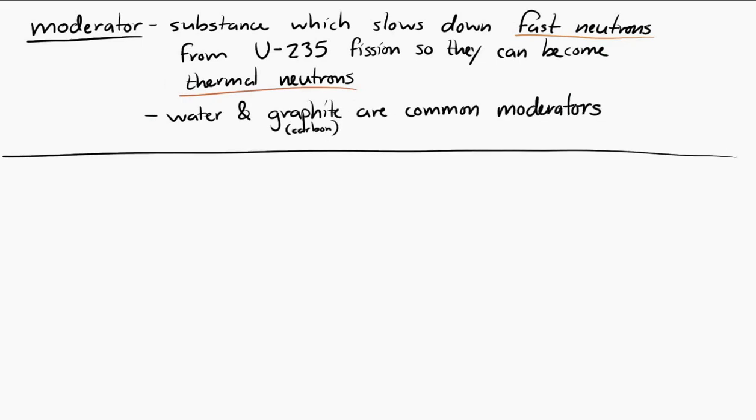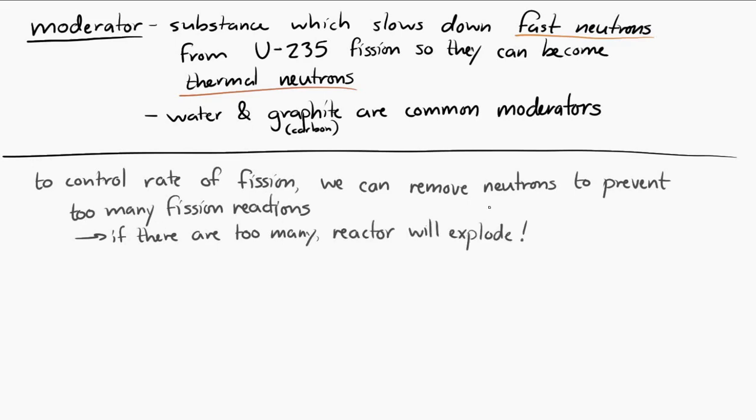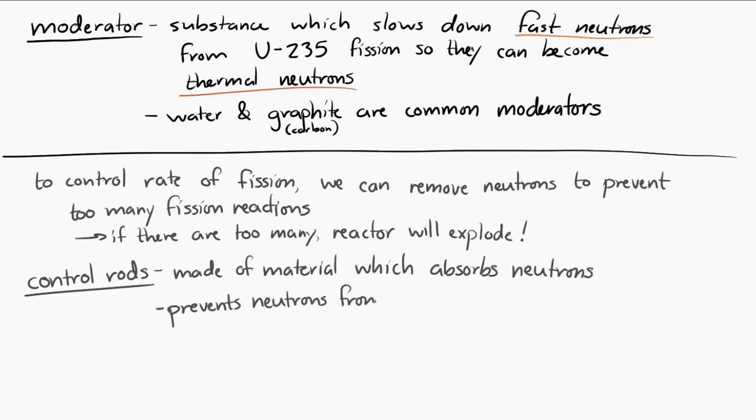Now, to control the rate of fission in the fuel, there has to be a way to remove the neutrons. If you don't remove any of the neutrons, then you can get a runaway reaction. You'll get too many fissions. You'll get more and more fissions, and your reaction will go out of control, and you'll get an explosion. So, the way that you control the fission reaction is you have to remove some of the neutrons. This is done using control rods. Control rods are made of a material which absorbs neutrons, preventing them from causing more fission reactions. Control rods are often made of boron, or cadmium.